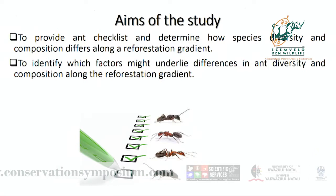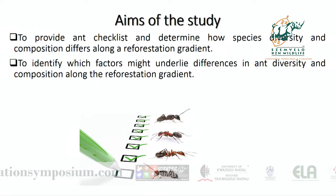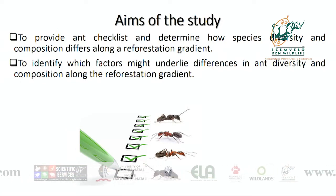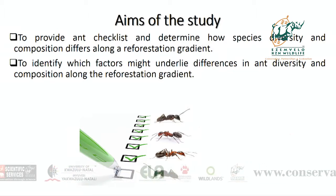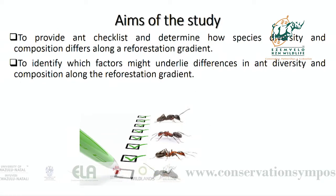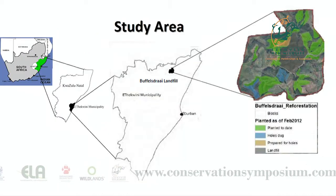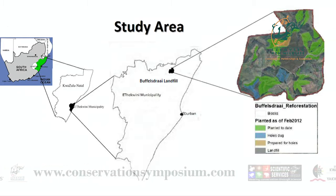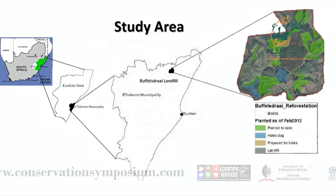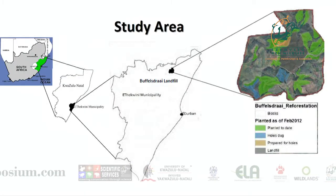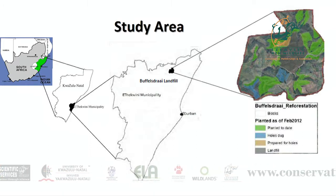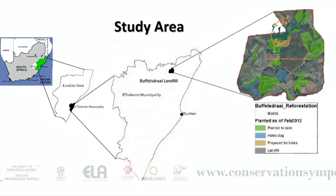The aim of my master's was to provide a checklist and to determine how species diversity and composition differ along this reforestation landscape, and also to identify which factors might underlie differences in ant diversity as well as composition along a reforestation gradient. The study was conducted in Buffers Dry landfill site, which is located in the north of Durban, a small town called Verulam. Eight sites were selected, but for the sake of this presentation I'll only present five of them. We have short-term, medium-term, and long-term restored sites, which are three years in between, as well as sugarcane and forest as the reference sites.